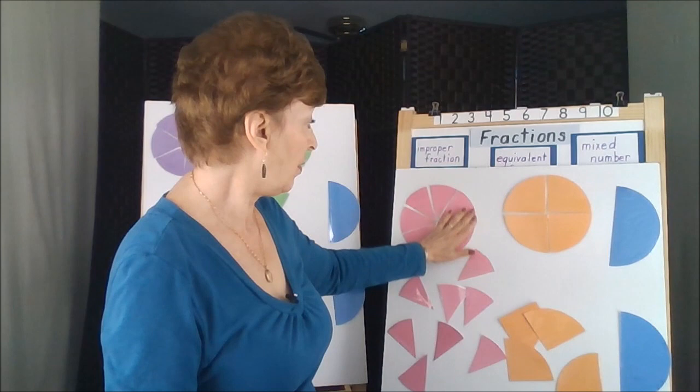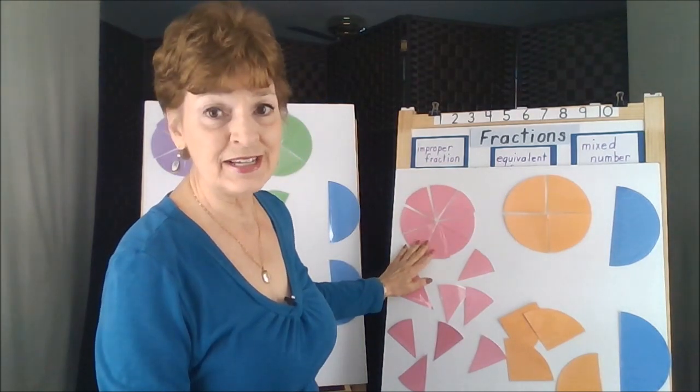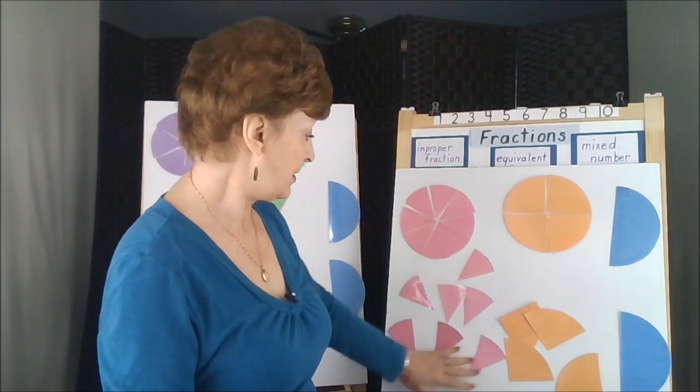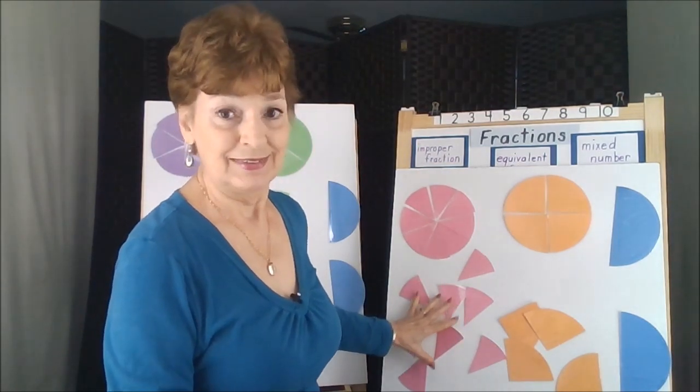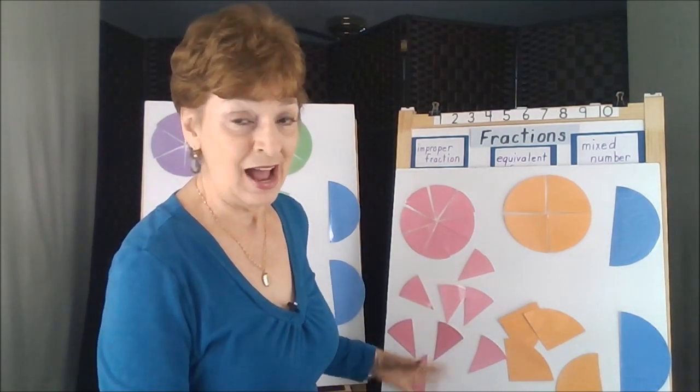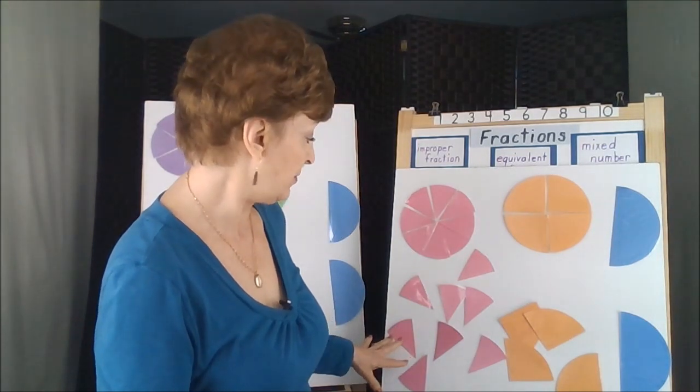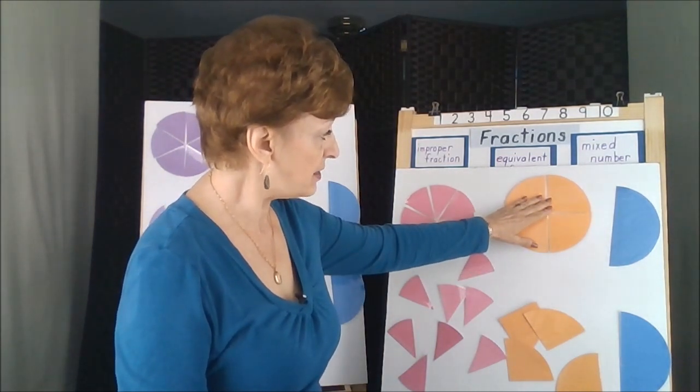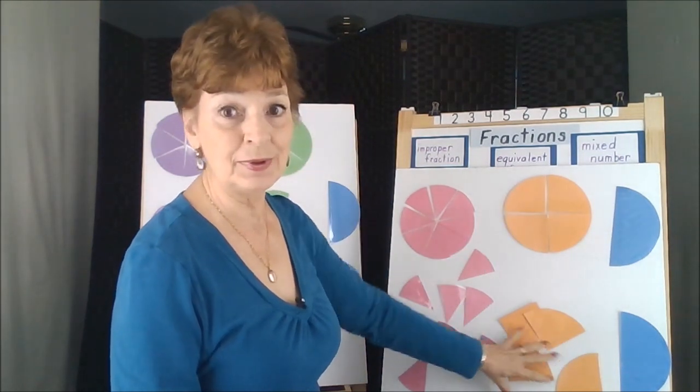When we have a whole, it's easy to understand. When we have eight eighths shown like this, it's kind of like, what does it all mean? How many are there? Maybe I miscounted. Here's a whole with fourths, and this is the jumbled up part.